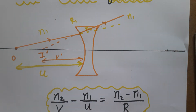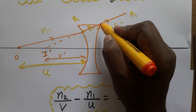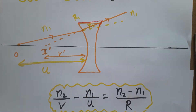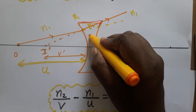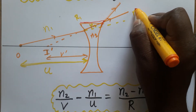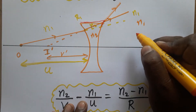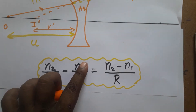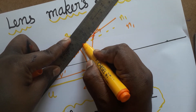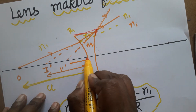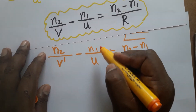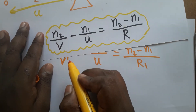Now refraction is going to happen at the second surface. The light is incident at the second surface and further deviates away from the normal, because the light is now traveling from the second medium to the first medium — from a denser medium to a rarer medium. It deviates further from its path. The final image is formed at this point, and I take this final image distance as v.